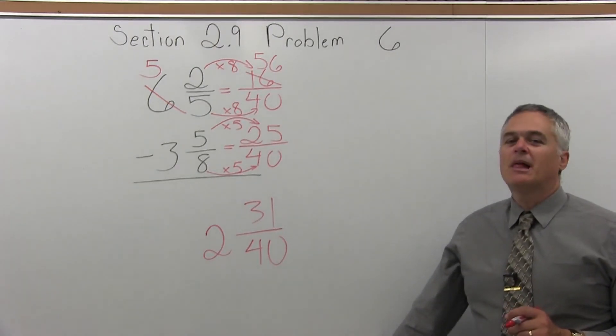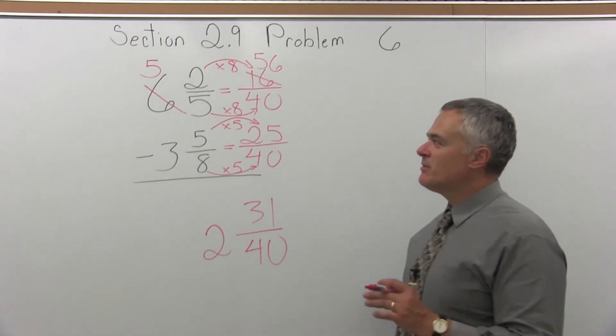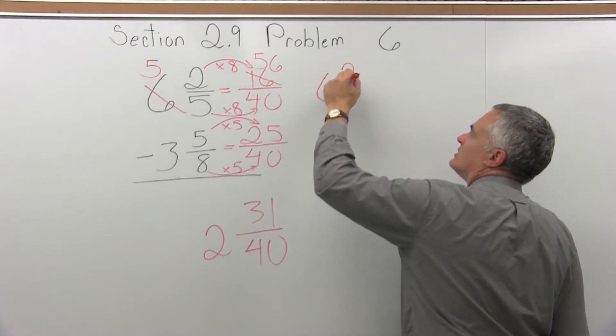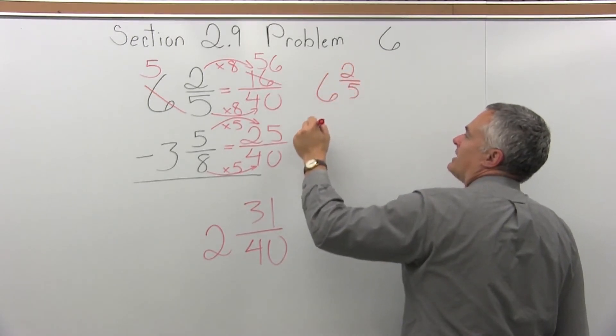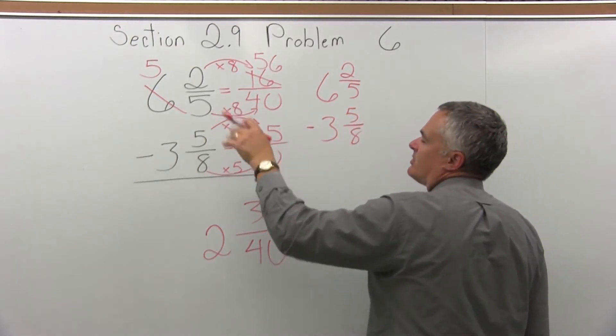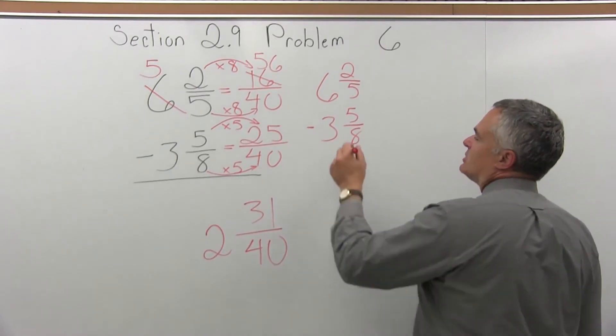Now that's the answer. Some people hate to borrow. They don't remember the steps or they might remember but they're not really sure. So what we can do is, let's say you have 6 and 2 fifths minus 3 and 5 eighths, and you start the whole thing with a common denominator and you say, oh no, it's one of those borrow problems.